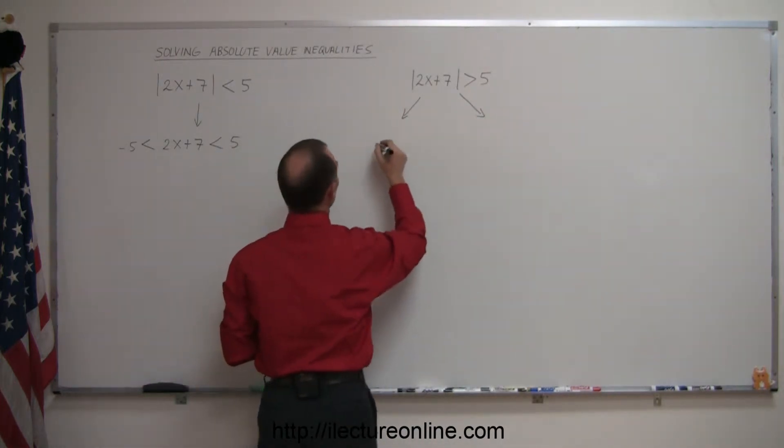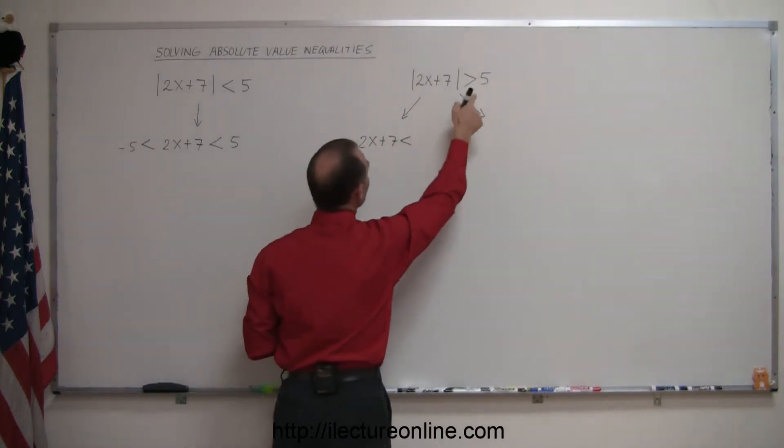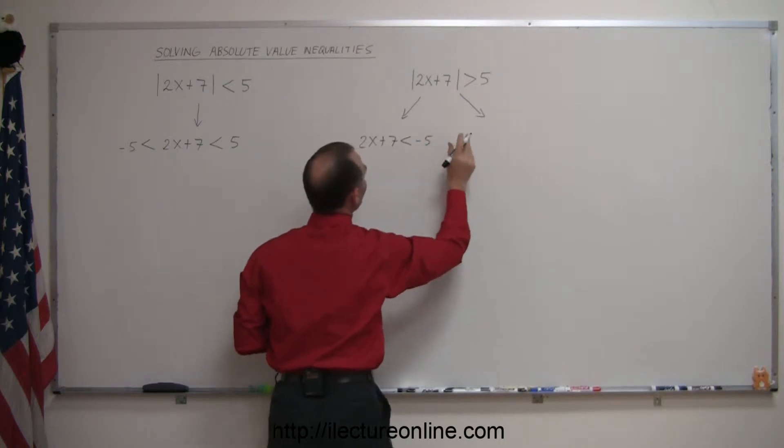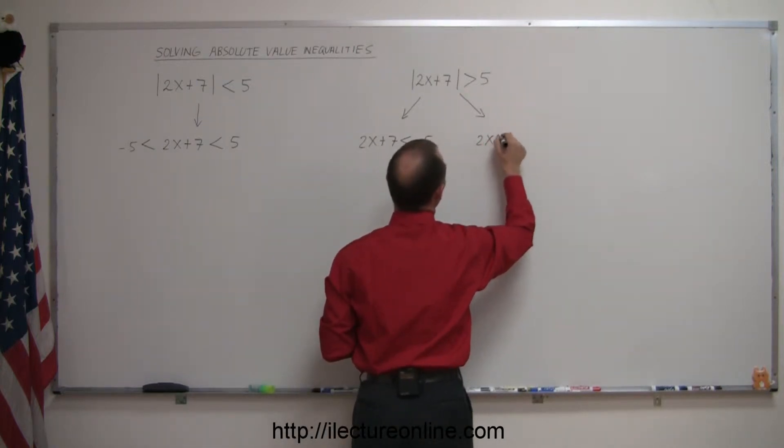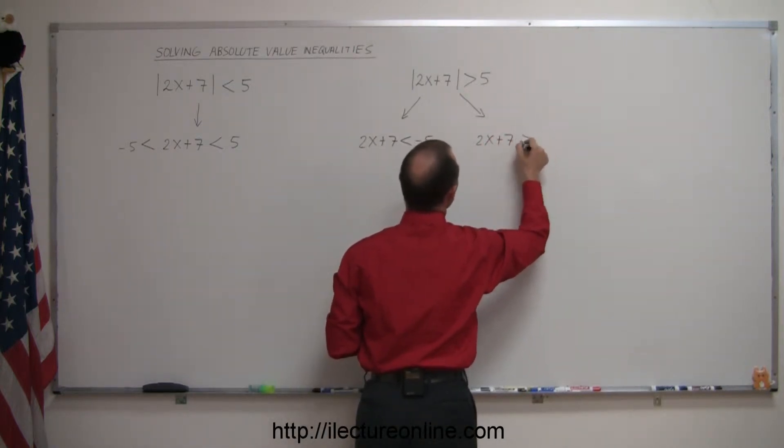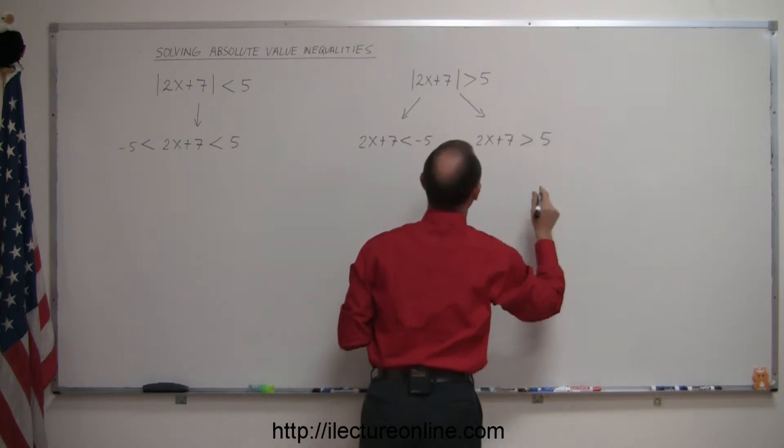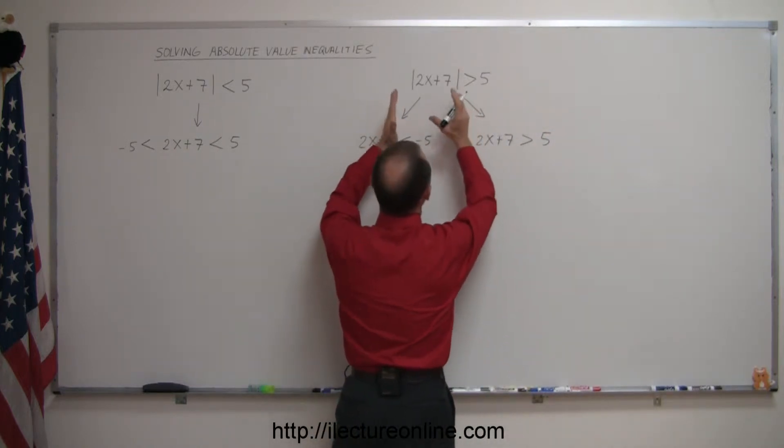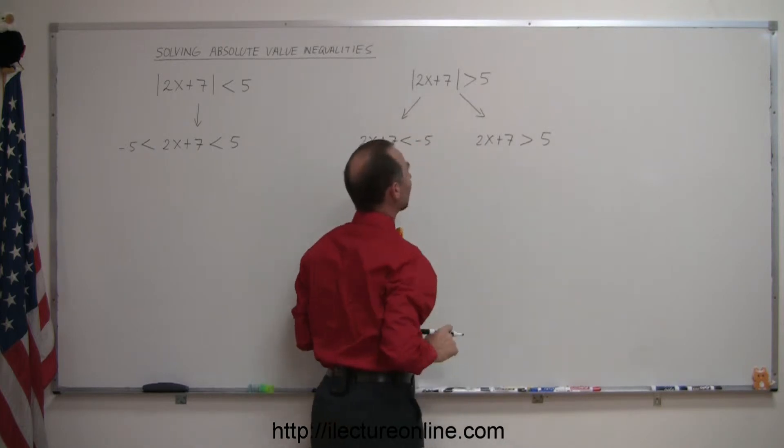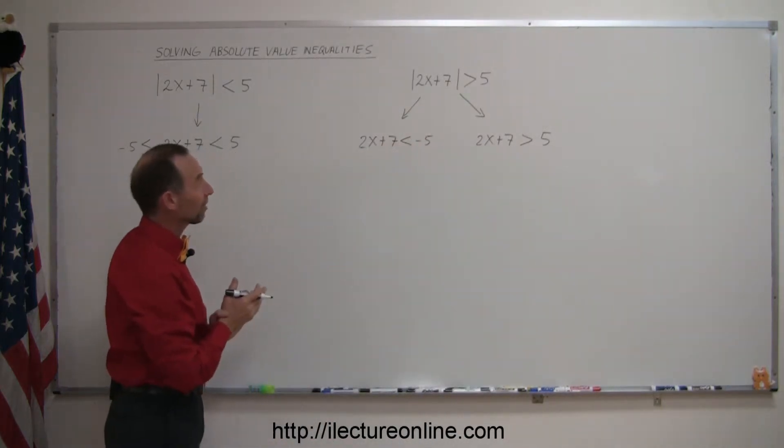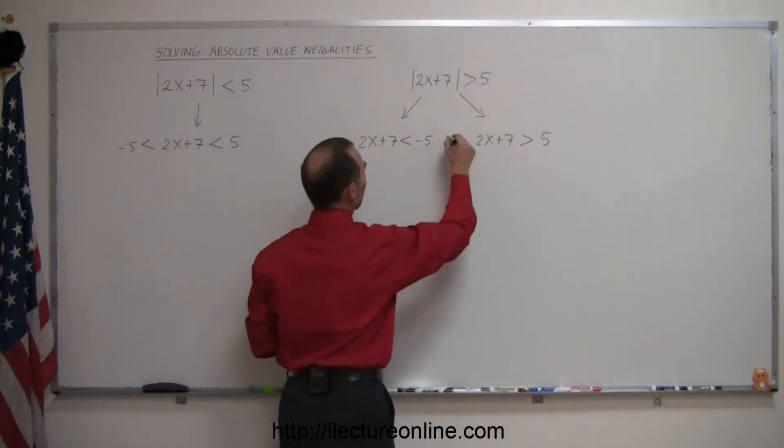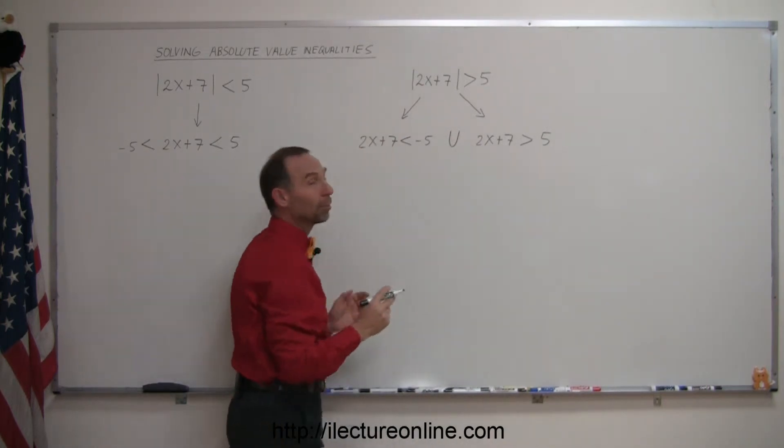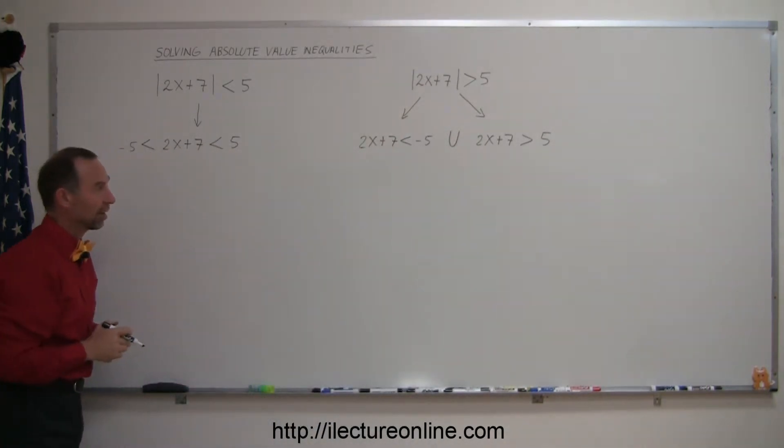You can say that 2x plus 7 is less than the negative of that number, minus 5. And you can say that 2x plus 7 must be greater than that number 5. So, here you account for both possibilities when this number inside the absolute value signs is positive or negative. And of course, that must both be true, so you use the union symbol, meaning both conditions must be satisfied.